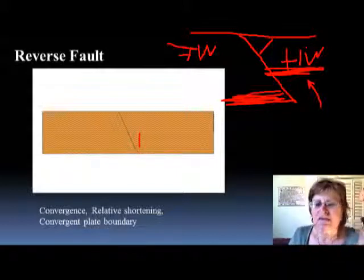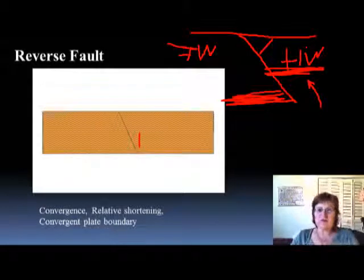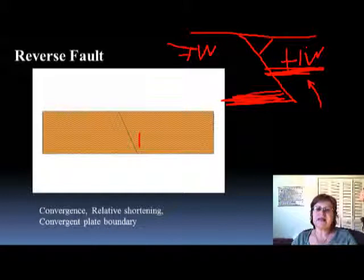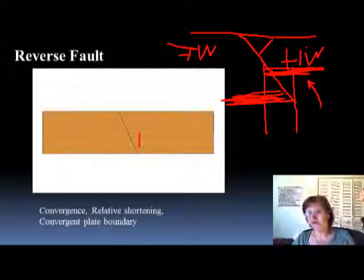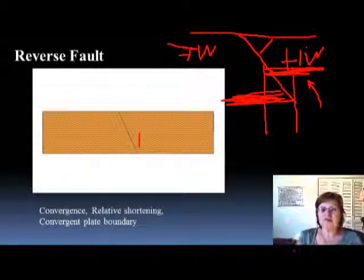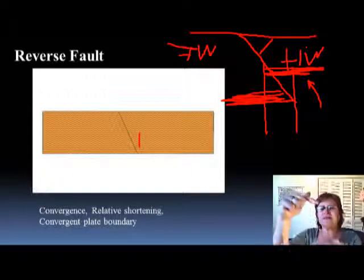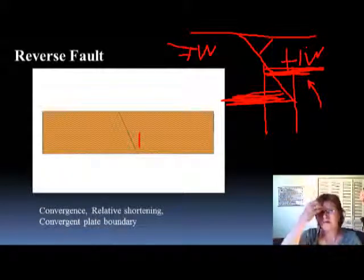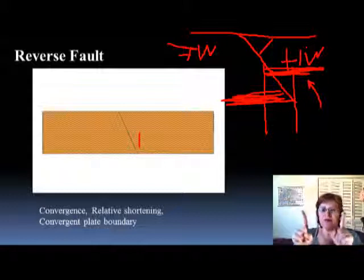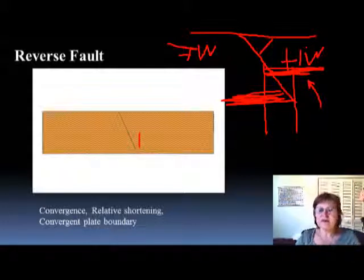This is an animated figure so you'll be able to see it. Another way to recognize a reverse fault: you can see that the layer you chose repeats above itself — on top of each other — and that is the amount of shortening. Anytime you see the same layer repeating on top of each other, that tells you the amount of relative shortening and you know it's a reverse fault.